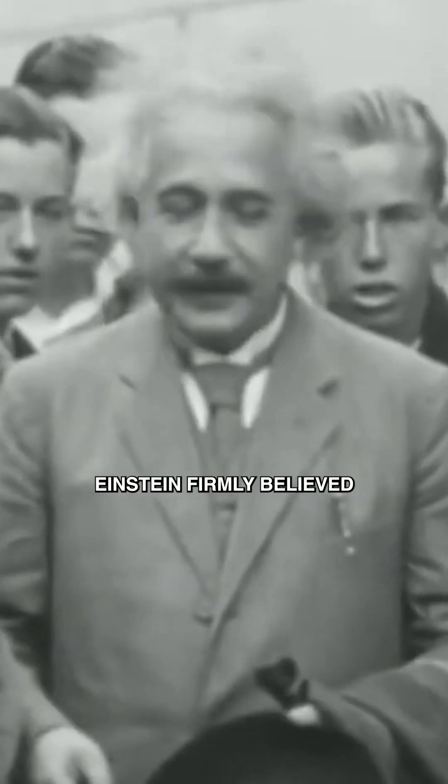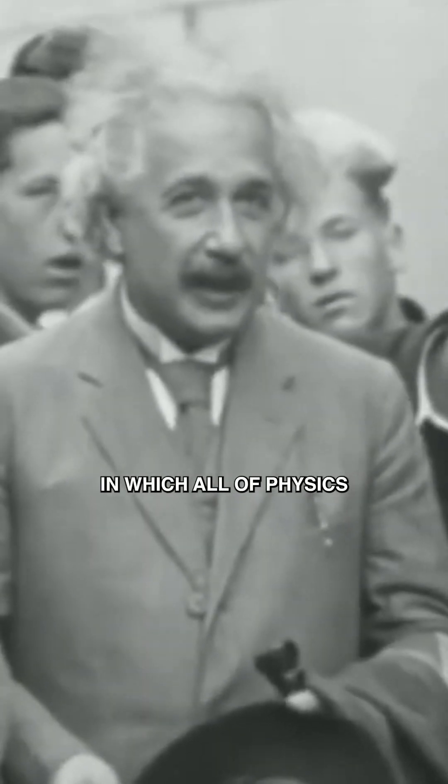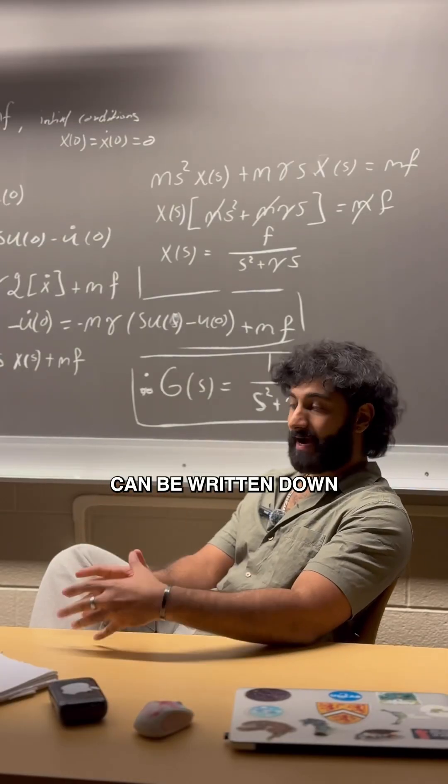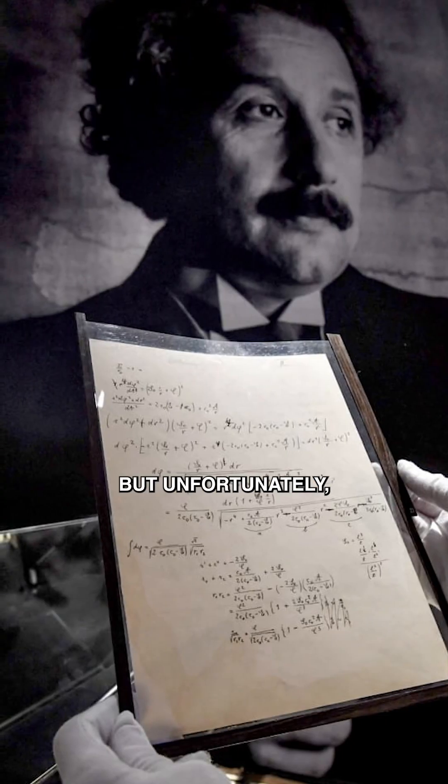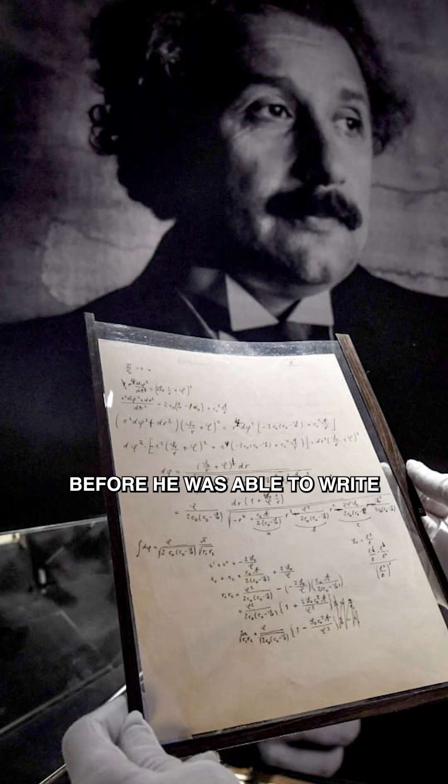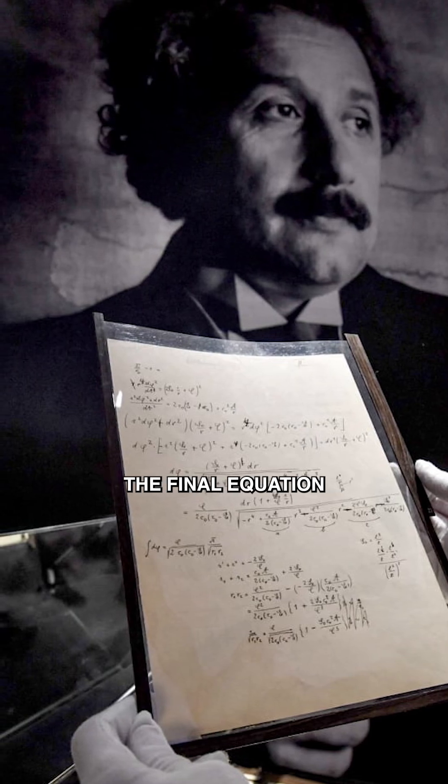Einstein firmly believed that there could be a way in which all of physics can be written down in a single set of mathematical equations. But unfortunately, Einstein died before he was able to write the final equation.